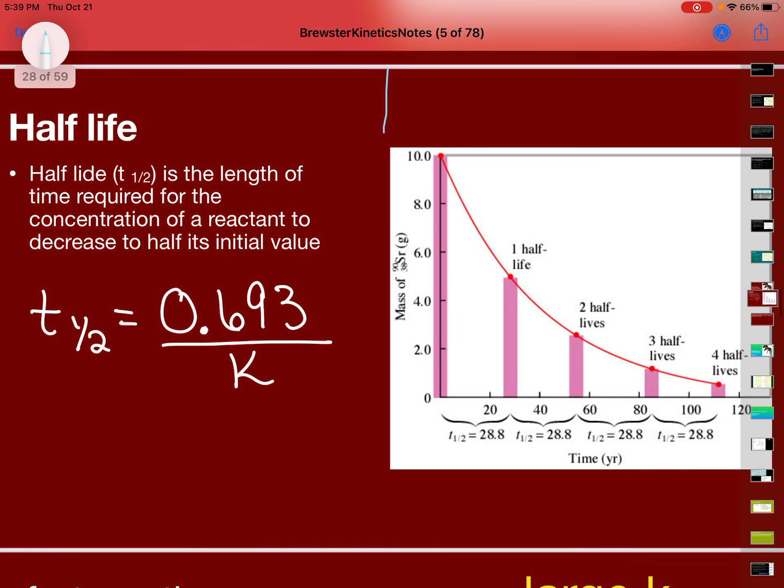And then we talked about a half-life, that the half-life is the length of time required for the concentration of a reactant to decrease to half of its initial value, and that as you did this over and over a time, you would produce an exponential graph. And that the equation that we use is this T1/2 equals 0.693 over K.